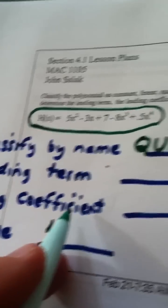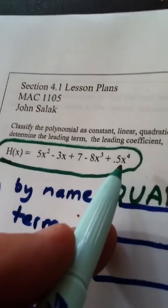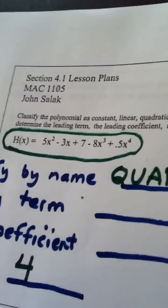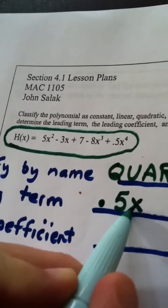They want the leading term, and then they want the leading coefficient. Now, this is not in the correct order, but the leading term is the one with the highest power. So the leading term would be 0.5x to the fourth,